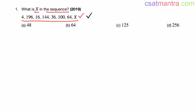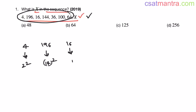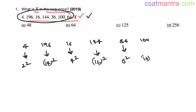Now let's look at this sequence. Four — I am writing it as 2 square. All these numbers are squares of natural numbers. 196 is 14 square. 16 is 4 square. 144 is 12 square. 36 is 6 square. 100 is 10 square. 64 is 8 square. Now X.